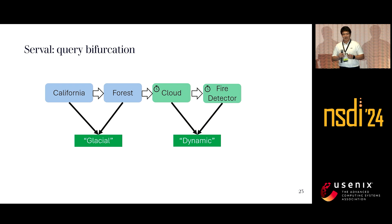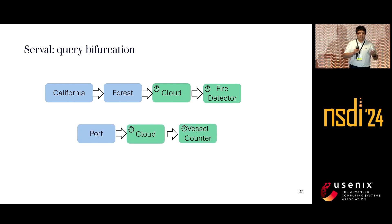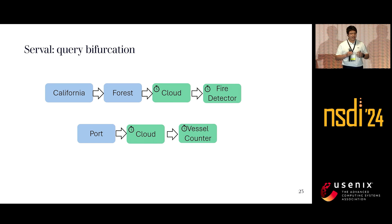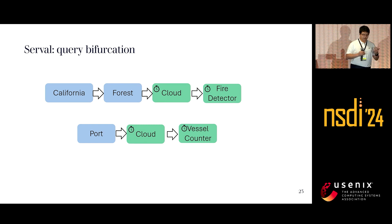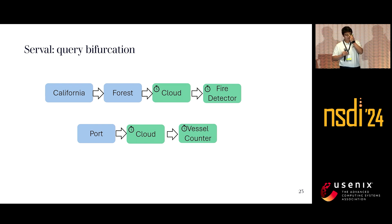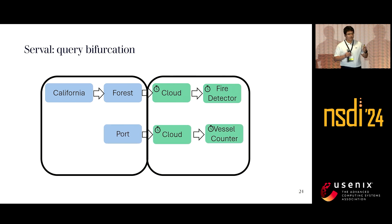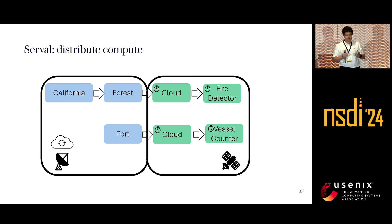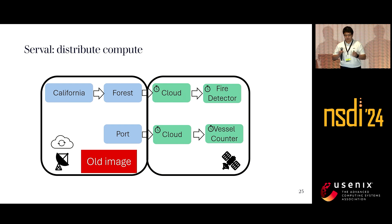This bifurcation applies broadly. For example, trading companies analyze satellite imagery of oil vessels near ports to predict oil prices, and that query can similarly be modeled as a chain of port, cloud, and vessel filters — again bifurcated into glacial and dynamic. This means we can split the entire compute load into glacial and dynamic parts, distributing compute across the ground and satellite: use old images on the ground to compute glacial filters, and only use new images on the satellite to compute dynamic filters.